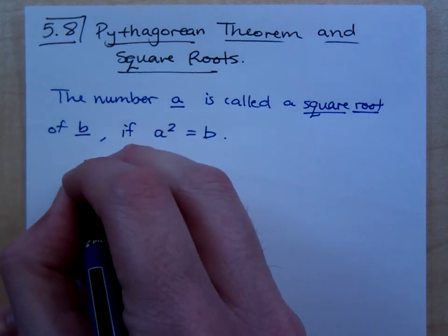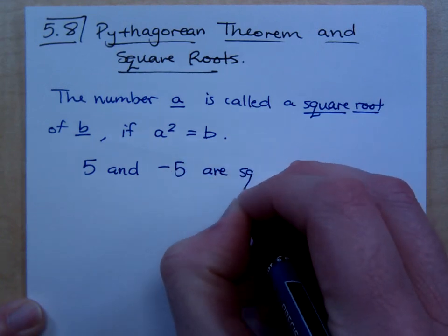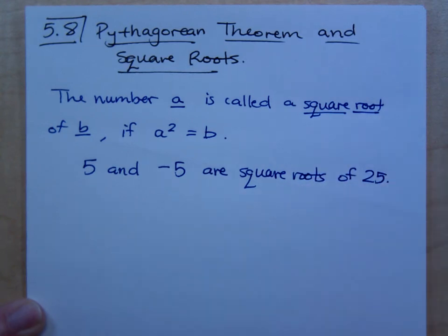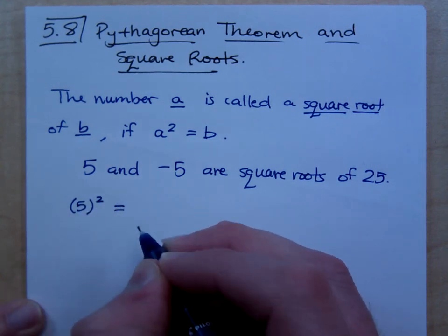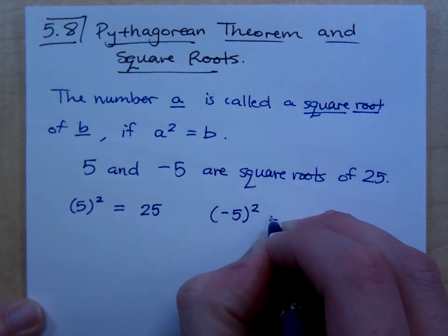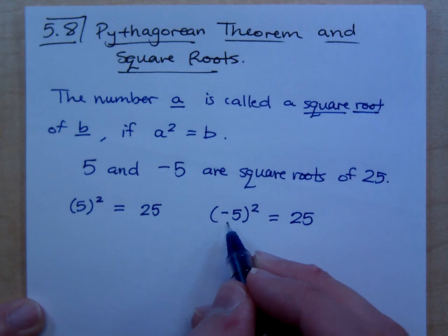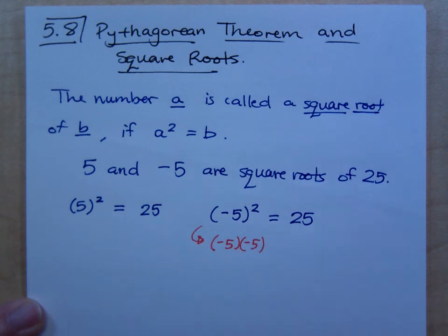For example, we would say that 5 and negative 5 are both square roots of 25. Why is that? Well, if I were to take 5 and I square that, what do you get? You get 25. If I were to take negative 5 and square that, what do you get? Don't you still get 25 because when you square this guy, that means negative 5 times negative 5, so negative times negative is positive.